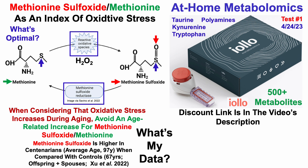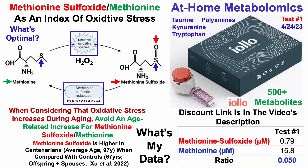So what's my data? Consider this baseline data — I can't make definitive conclusions from it because I wasn't able to find published data for the methionine sulfoxide to methionine ratio and how it changes during aging. Looking at my data, my methionine sulfoxide level is 0.79 micromolar — relatively higher compared to cystine, another oxidized molecule. My goal is to reduce my levels of methionine sulfoxide. When divided by methionine, I get a ratio of 0.05. Stay tuned for future videos using the Iolo kit to see how well I'm able to reduce my oxidative stress levels.